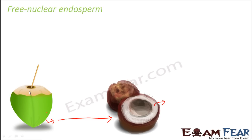In the tender coconut phase there is liquid endosperm in which multiple nuclei are floating. Now that fluid has multiple nuclei floating in it. Later, cell walls start developing and enclosing several nuclei. In the tender coconut water, a lot of nuclei are floating; cell walls will start developing and enclosing a few nuclei. The number of nuclei enclosed is variable — multiple nuclei will be enclosed by one cell wall and gradually cells will start to form.